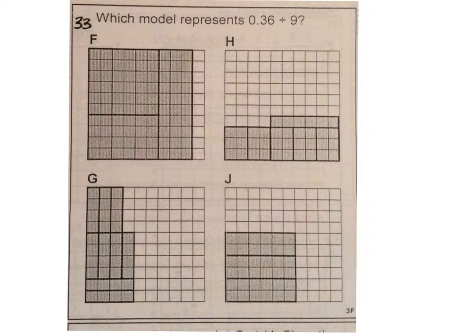Number 33. Which model represents 36 hundredths divided by 9? Don't forget, one way I really like to work these if you don't know how to check out the model is to work the algorithm. Work that out to the side. And then know that each group is going to have what you receive as your quotient. Also, since 36 hundredths is your dividend, the number of shaded pieces is going to equal 36 hundredths broken into nine equal groups.